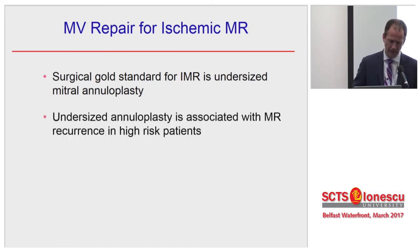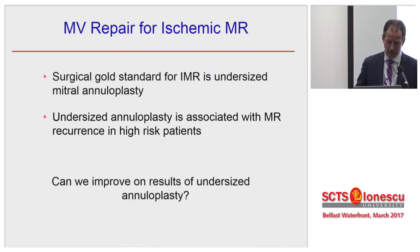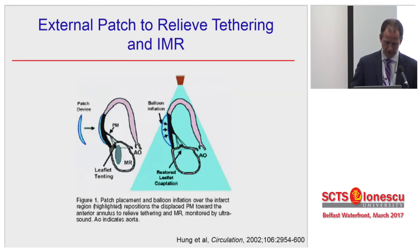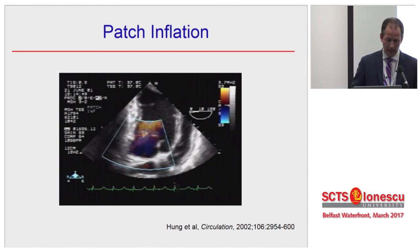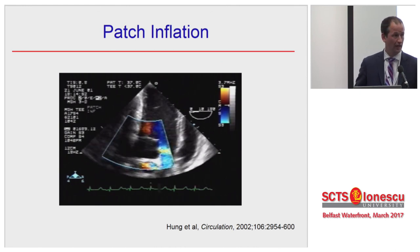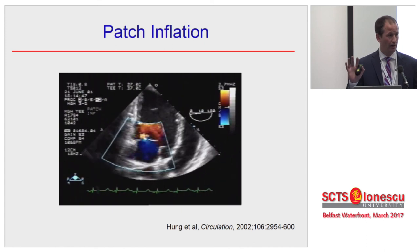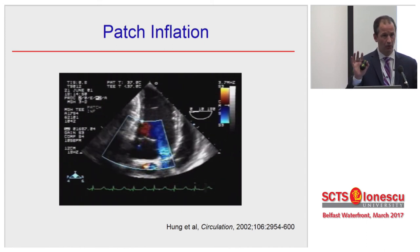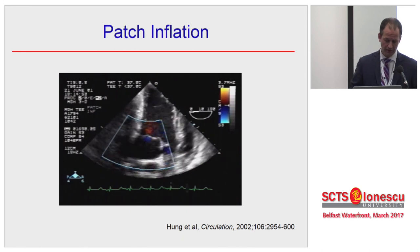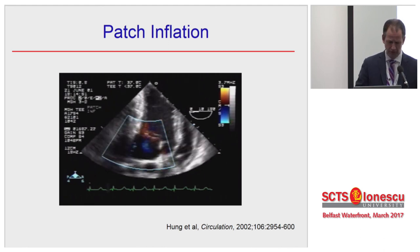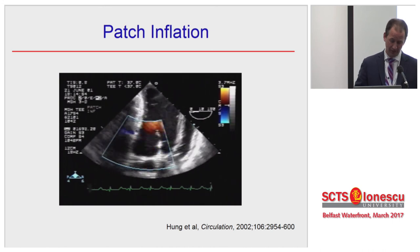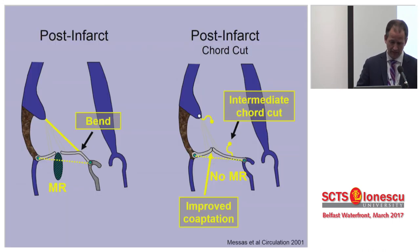Since undersized annuloplasty is the gold standard but carries significant recurrence risk, are there ways to improve? Bob Levine's group at Mass General showed in a sheep model that compressing the posterolateral wall toward the annulus with an epicardial patch and inflatable pericardial device abolished ischemic MR. A company is also working on a device implanted inside the pericardium for this purpose.